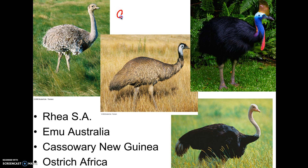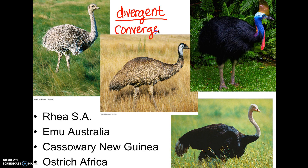This would be an example of divergent evolution — meaning they came from a common ancestor, but through mutations, natural selection, and living in different environments, those influences led to the species that exist today. Don't confuse that with convergent evolution: the mole in Australia and the mole in North America are the result of convergent evolution — they did not come from a common ancestor, but developed similar features like big noses, small eyes, and large claws because they faced similar pressures. Divergent evolution starts from a common ancestor; convergent evolution starts from different places but develops similar characteristics.